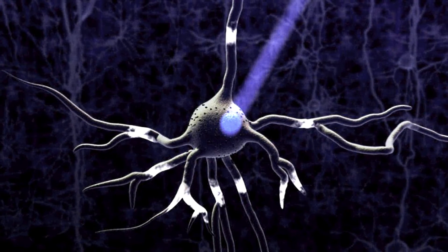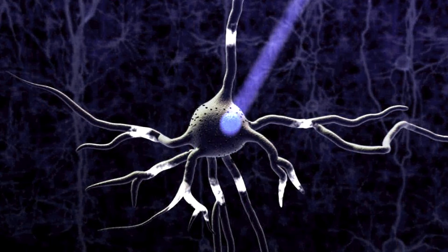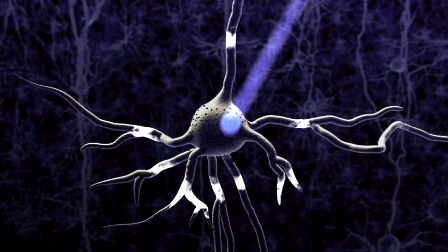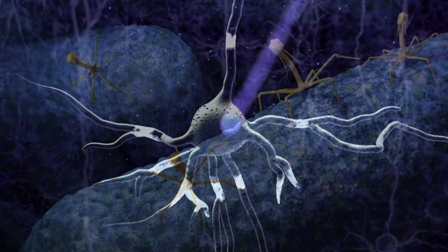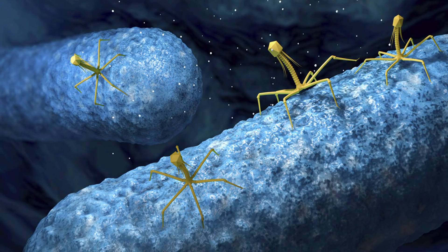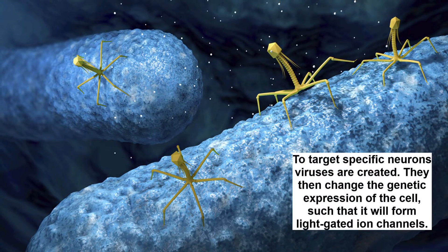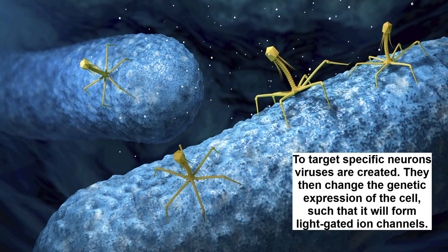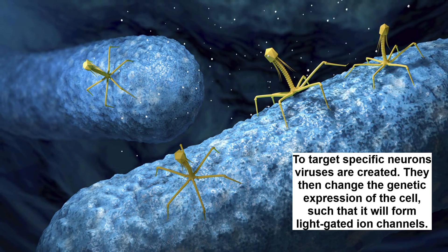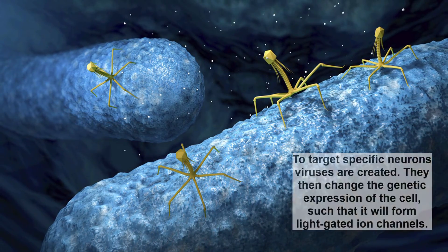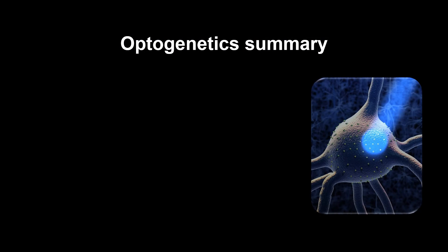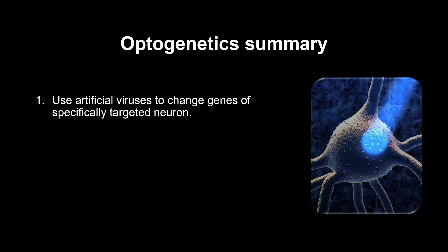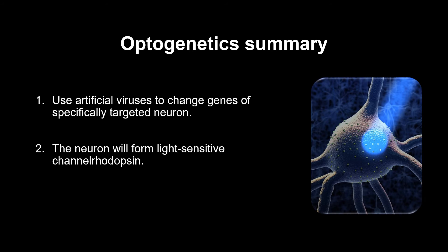But then the question is, how do we change the genetic expression of a neuron? For that we use viruses. When a virus infects a cell, it enters its own genetic material. For optogenetics, we are not just going to use any virus — we are going to make our own that specifically targets certain neurons and can promote the expression of channelrhodopsin. In summary, we use artificial viruses to change the genetic makeup of a neuron such that it now creates light-sensitive ion channels. This will make the neuron fire if light is shined onto it.